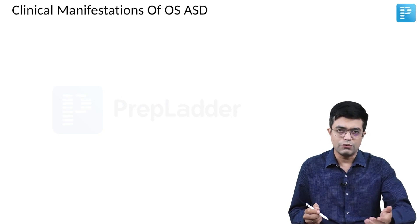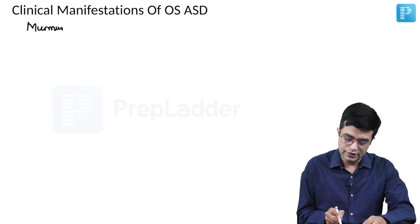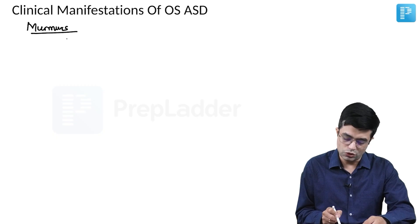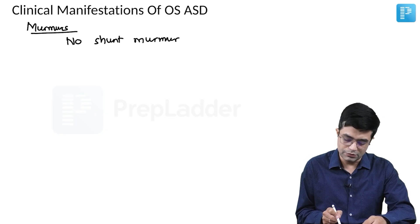We have talked about the hallmark finding. What about murmurs? There will be no shunt murmur in ASD because the pressure gradient is too little. Flow murmurs may sometimes be heard.